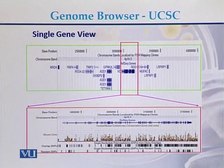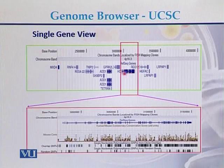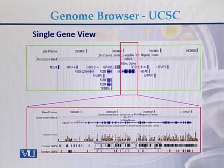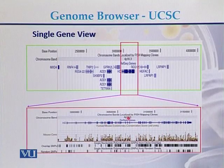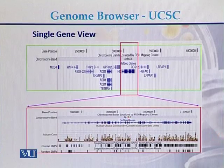If we want to see a single gene, this is the single gene view. Here we can see a gene that has been magnified, and this is the magnified view of the gene which is present at 4P16.3. So a single gene can also be viewed with the help of genome browsers.